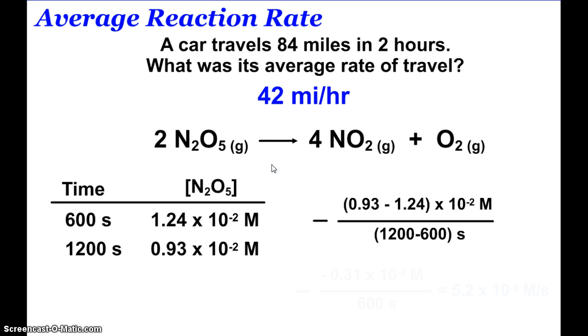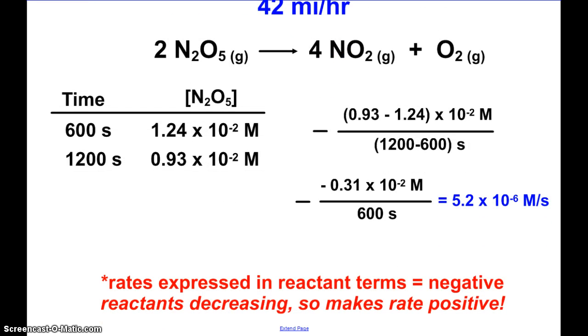I subtract the 1200 minus the 600. I subtract my concentrations on top, subtract my time on the bottom. I see that it ends up with an average rate of reaction of 5.2 times 10 to the negative 6 molar per second, or moles per liter second. Just as a note, when we're talking about rates and they're expressed in reactant terms, we say they are negative because the reactants are decreasing. It makes sense to say that the rates are positive, that the reaction is proceeding at a certain rate.